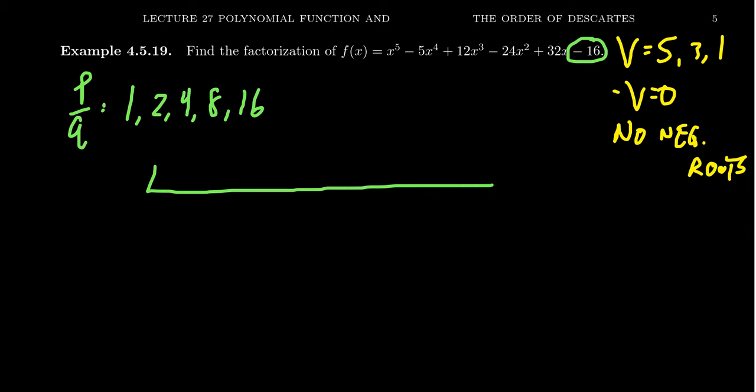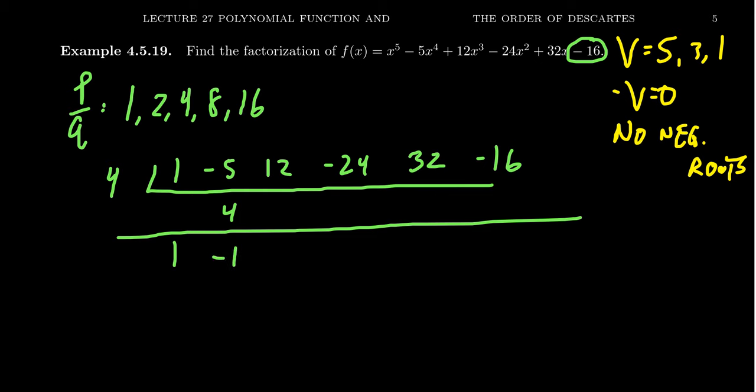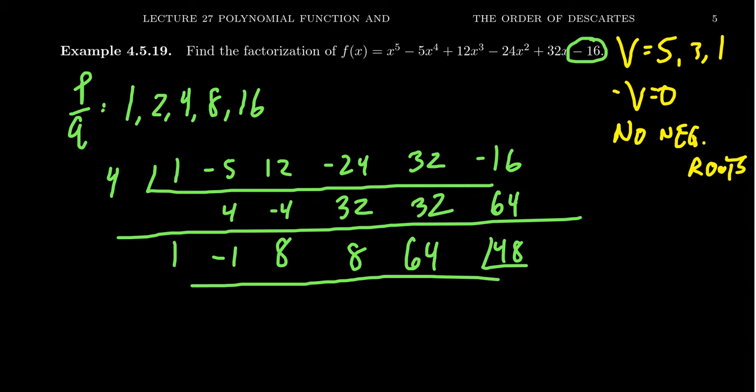If you try 4, you're going to get something like the following. Let's make sure we write down the coefficients: 1, minus 5, 12, negative 24, 32, minus 16. If I tried 4, we could bring down the 1. 1 times 4 is 4. 4 minus 5 is negative 1. 4 times negative 1 is negative 4 plus 12 is 8 times 4 is 32. 32 minus 24 is 8. 32 plus 32 is 64. And then 64 minus 16, that should be 48.